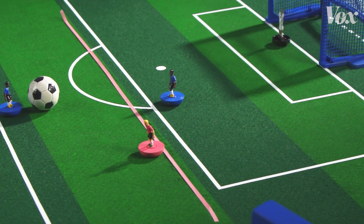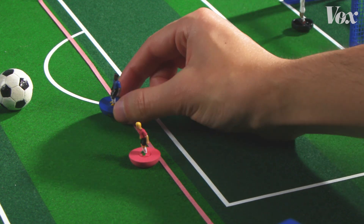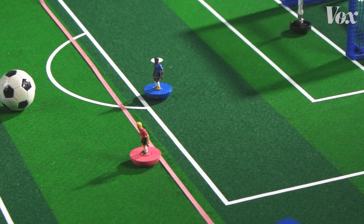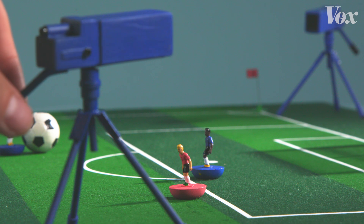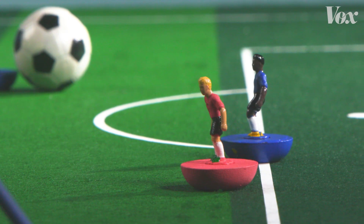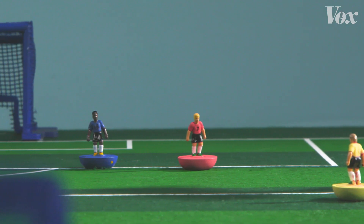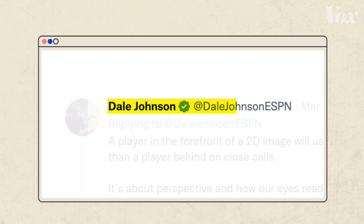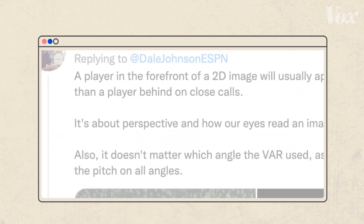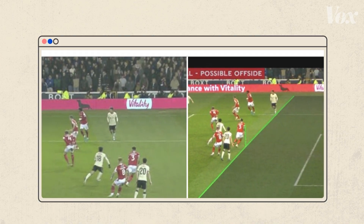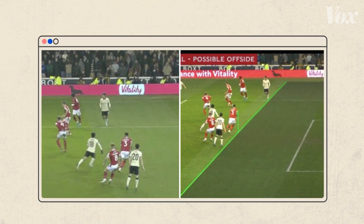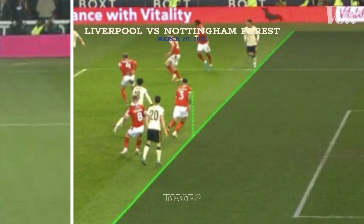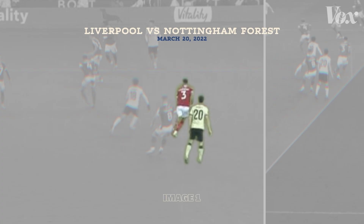Offside should be an objective call — either you're in front of this line or behind it. What makes it tricky is that we're often judging with subjective perspectives, and it can be hard to tell when a player is teetering over the line. As this tweet by Dale Johnson of ESPN shows, the angle at which you see something really matters.